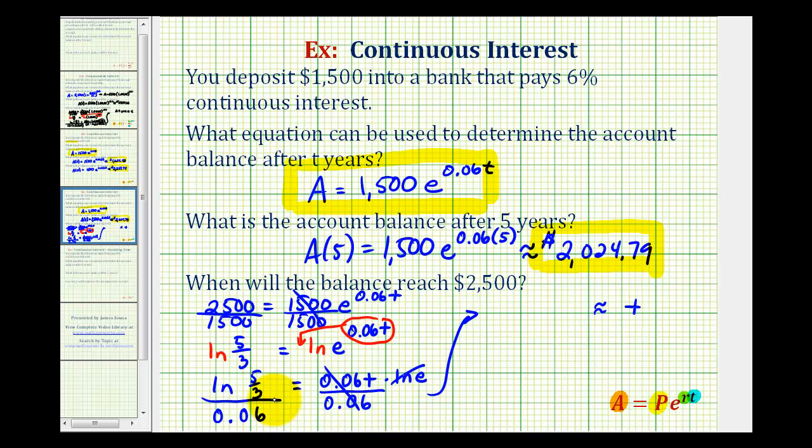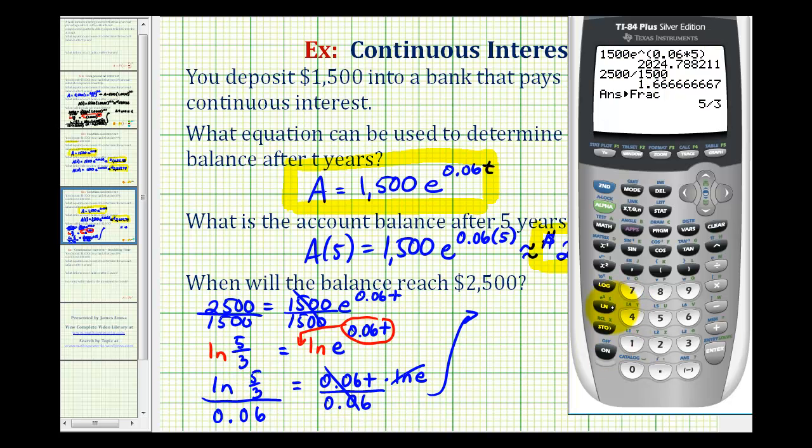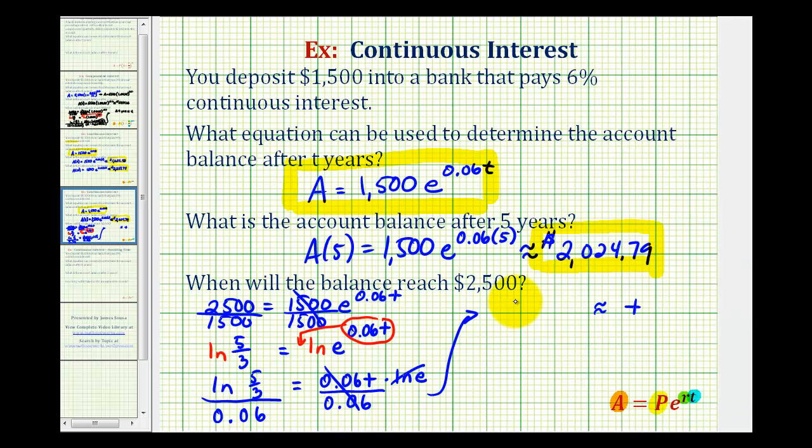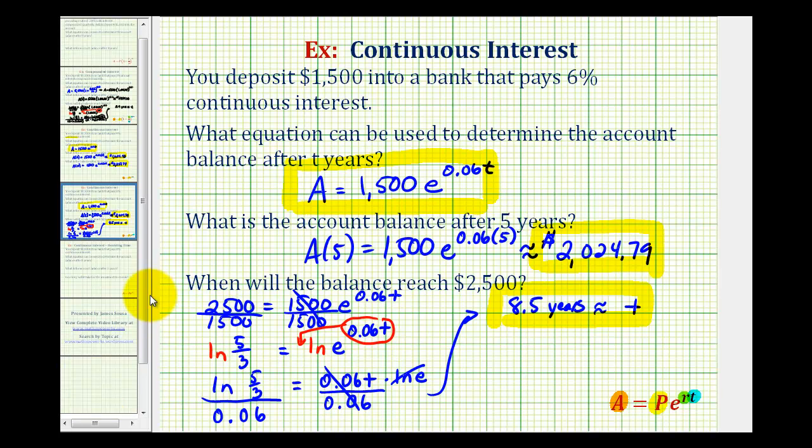And now we'll use the calculator to approximate this quotient. So we have natural log of 5/3 divided by 0.06. So if we rounded to the nearest tenth of a year, this would be approximately 8.5 years. Okay, we'll take a look at one more example in the next video.